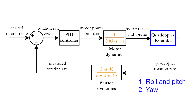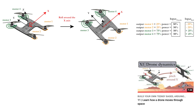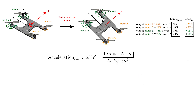Roll, pitch, yaw, and vertical velocity — the four transfer functions that describe these movements will form the quadcopter dynamics. Let's start with a roll movement. In our previous video series, we learned how a drone can perform a roll motion around the x-axis by simply increasing the output of motors 3 and 4 while decreasing the output of motors 1 and 2. This means that in order to rotate the quadcopter in the roll direction, you apply a torque around the stationary x-axis, called Torque x.